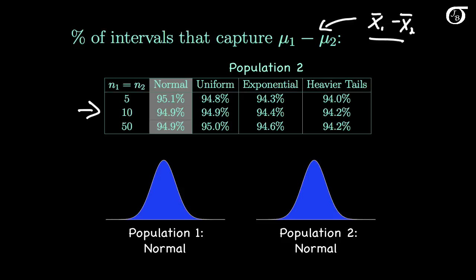We're going to look at a variety of situations. First, population 1 will have a normal distribution and population 2 will also have a normal distribution. When both populations are normal, the estimated coverage percentages are very close to 95% — we have 95.1% and 94.9%. Theoretically the percentages equal exactly 95% for all sample sizes, but there's still a little variability since we only took 100,000 pairs of samples. So when the normality assumption is met, the procedure works very well.